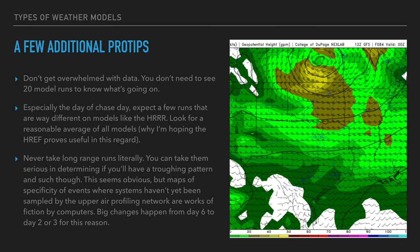A few pro tips: don't overwhelm yourself with data. You don't need to look at 20 model runs to know what's going on — keep your workflow simple. Today you can have 20 to 30 models available on a chase day, and people post the best-looking single run showing the best updraft helicity track. Don't take all that seriously. Get a good aggregate of where models are forecasting precipitation, use your real-time information, make your forecast, and run with it.